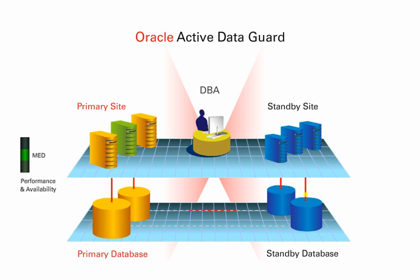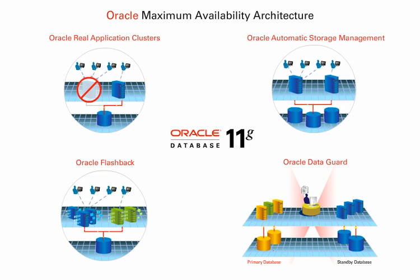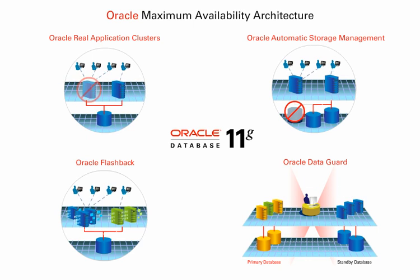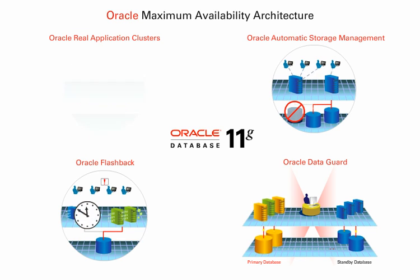from primary systems, so they can predictably deliver the highest quality of service in terms of performance and availability. Implementing a maximum availability architecture using Oracle Database 11G will help protect business applications and information from failure, reduce your cost of downtime, and keep your organization running smoothly 24 by 7.